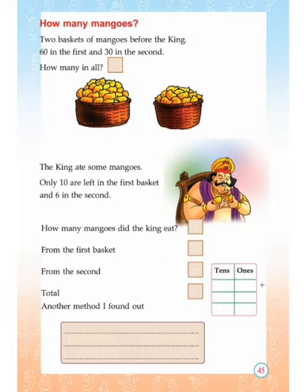So now you can find the total mangoes the king ate. 50 plus 24. From the first basket the king ate 50 — write that in the column. From the second, 24. Write the total in that column also.